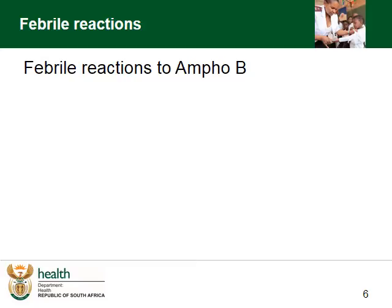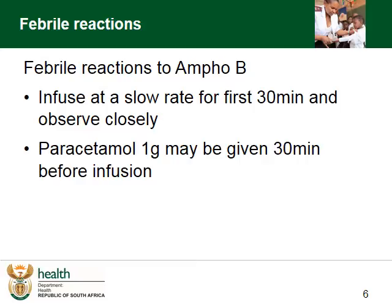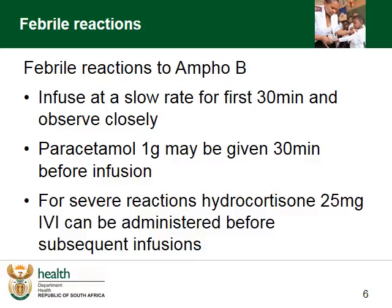Febrile reactions may occur due to Amphotericin B. It is essential to infuse at a slow rate for the first 30 minutes and to observe the patient closely for any increases in temperature. For those that have febrile reactions to the infusions, paracetamol 1 gram may be given 30 minutes before the next infusion. For severe reactions, hydrocortisone 25 mg IVI can be administered before subsequent infusions.